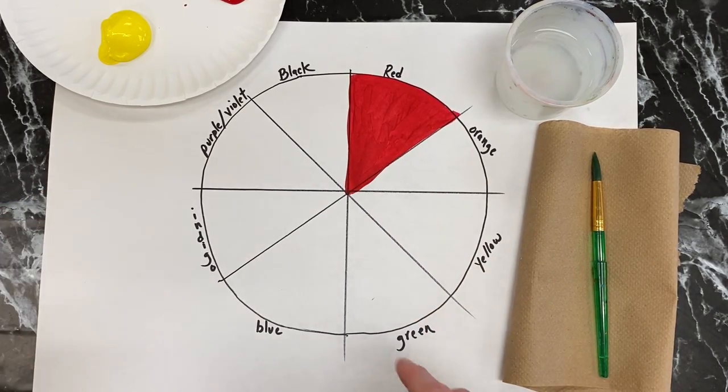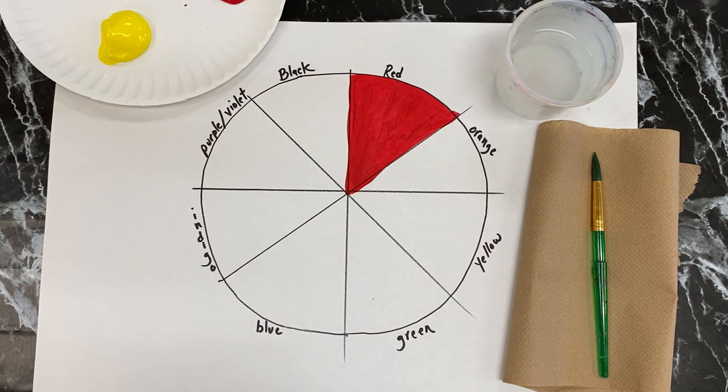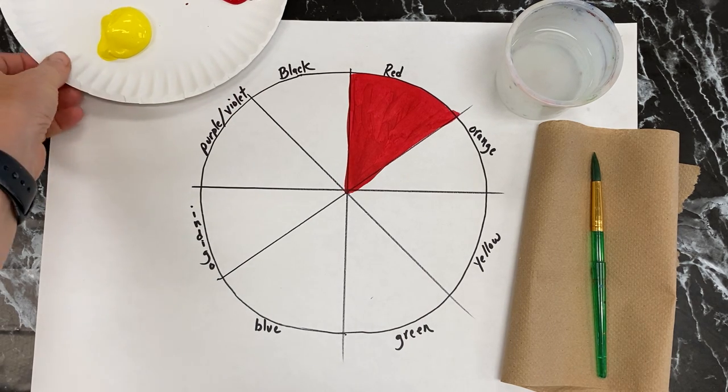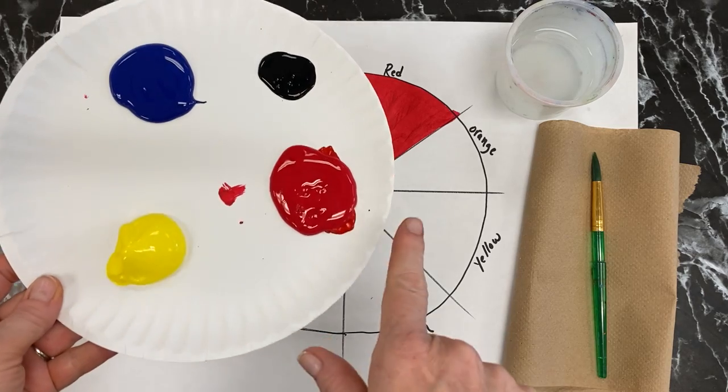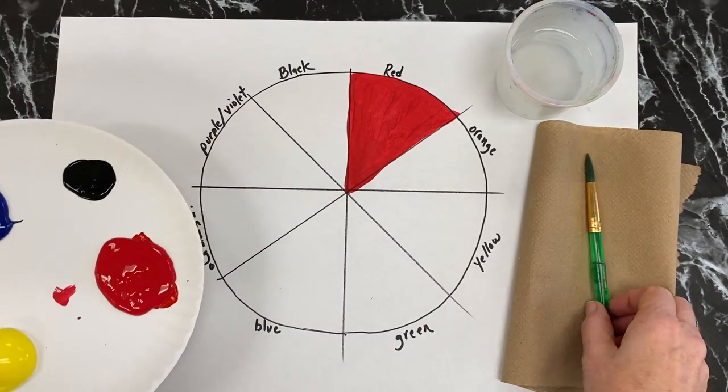So violet and purple is the same color, it's just two different terms. The last section will be black. So obviously today you're gonna get a paint of blue, red, and yellow. Pretty easy, you're just gonna start painting your red, yellow, and blue.